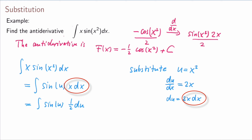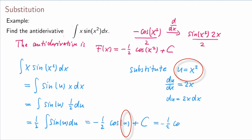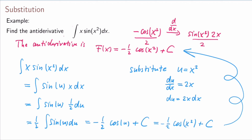Pulling the factor 1/2 out front, we have (1/2)·∫sin(u) du, which is easy to integrate. The antiderivative of sine is minus cosine, giving −(1/2)cos(u) + C. Now we substitute back: u = x², so the answer is −(1/2)cos(x²) + C — the same result as before.